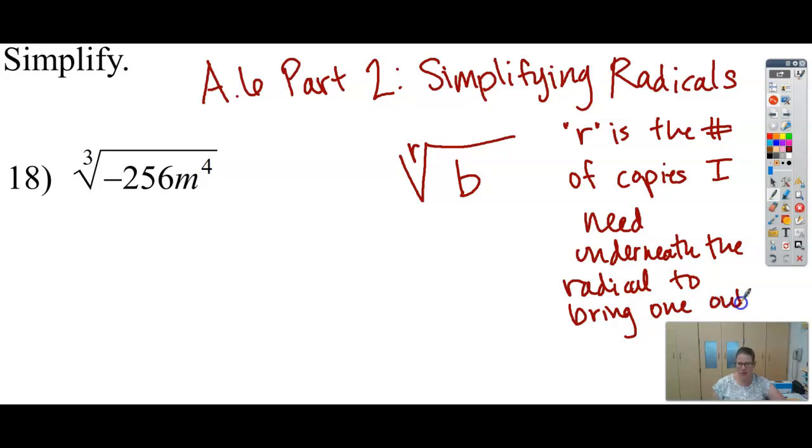So on a square root, that's 2, right? On a cube root, it's going to be 3. So on this one, I'm going to need 3 copies underneath in order to bring one out. Now this one is negative under here. And if there's a negative on yours, don't worry too much about it. We're going to kind of ignore it until the end. Since this is a cube root, our answer will just be negative.